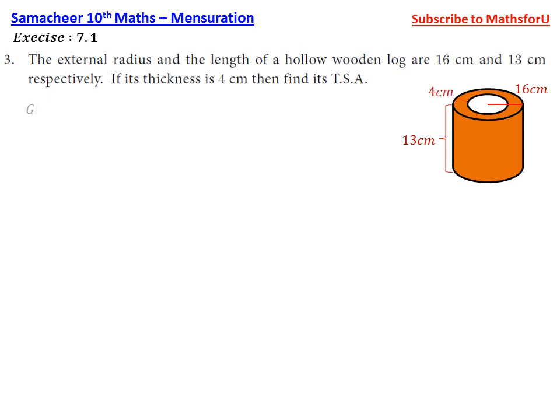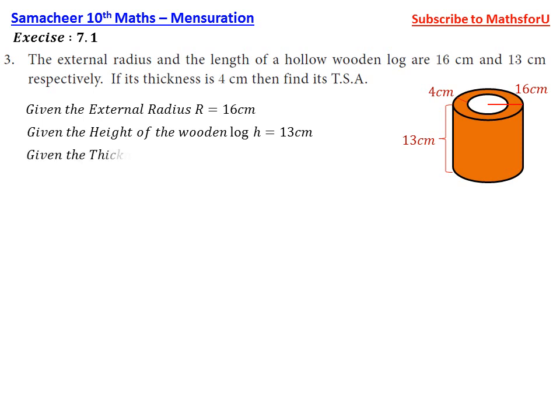Given the external radius R is 16 cm. Also given the height of the wooden log H is 13 cm. Given the thickness of the wooden log is 4 cm. So internal radius will be external radius minus the thickness, that is 16 cm minus 4 cm will be 12 cm is the internal radius.